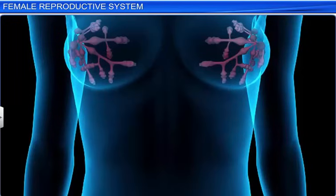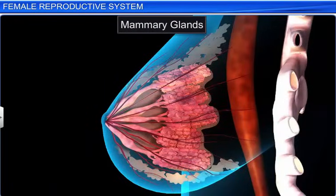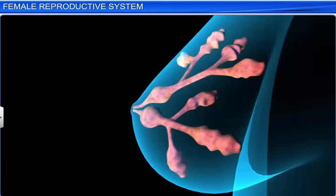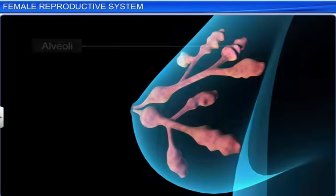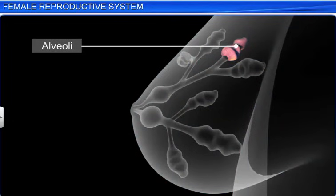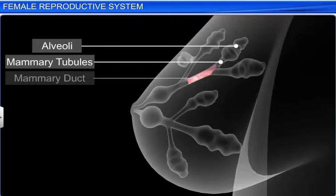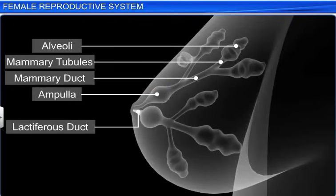The female reproductive system is supported by the mammary glands. The mammary glands, or breasts, are modified sweat glands that lie over the pectoral muscles. They contain glandular tissues and a variable amount of fat. Internally, each breast is divided into 15 to 20 mammary lobes containing clusters of cells called the alveoli. The alveoli open into the mammary tubules. The tubules of each lobe join to form the mammary duct. Several ducts join to form a wider ampulla, which is connected to the lactiferous duct. The lactiferous duct opens out through the nipple, from which milk is sucked out.